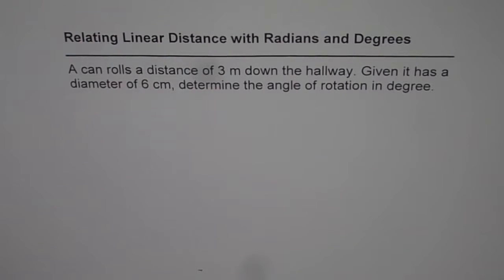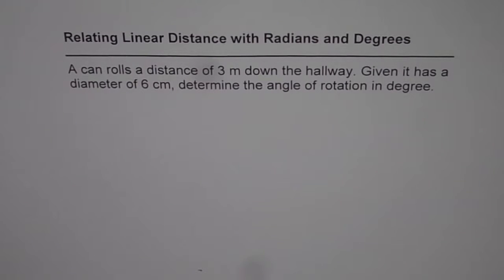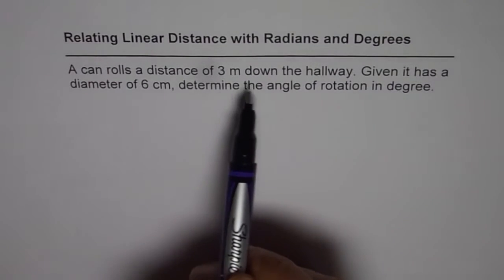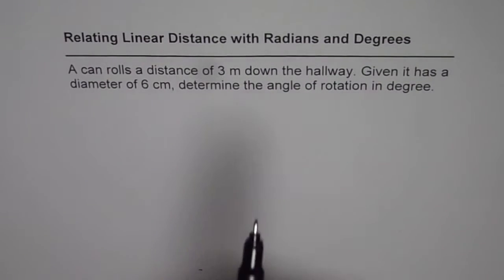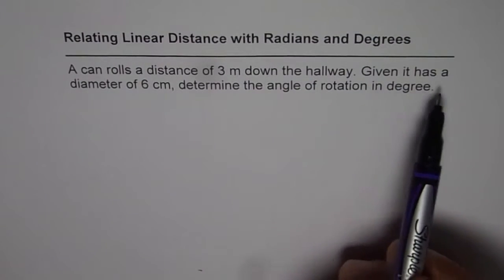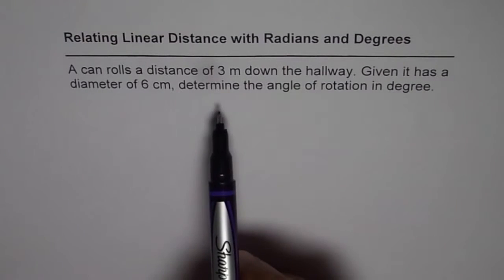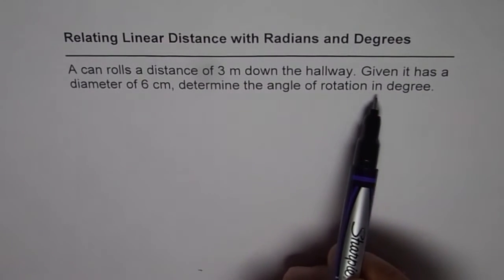I'm Anil Kumar sharing with you an excellent question from my student. In this question you are going to learn how to relate linear distance and number of rotations with the angle of rotation. The question is: a can rolls a distance of 3 meters down the hallway, given it has a diameter of 6 cm, determine the angle of rotation in degrees.